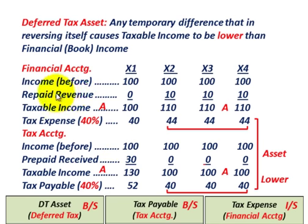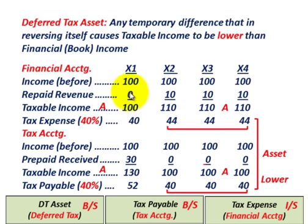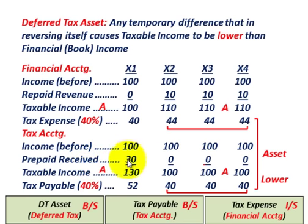In this case, we're looking at some prepaid revenue. For financial accounting, our income is $100,000 each year, and we received $30,000 in prepaid revenue — say a subscription. Financial accounting accrues it as earned, but for tax accounting we recognize it when the cash is received. So in year one, $30,000 in revenue is recognized on a cash basis for tax accounting.